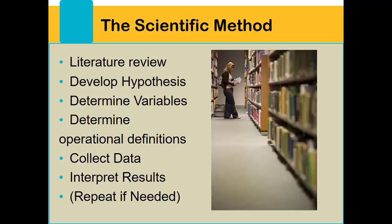So the scientific method consists of these steps. First, we do literature review, then we develop hypothesis, determine variables, determine operational definitions, collect data, interpret results, and then we repeat as needed. So let's talk about each of those steps.